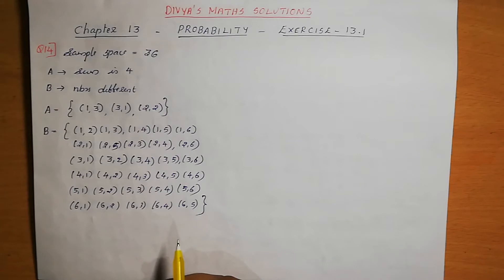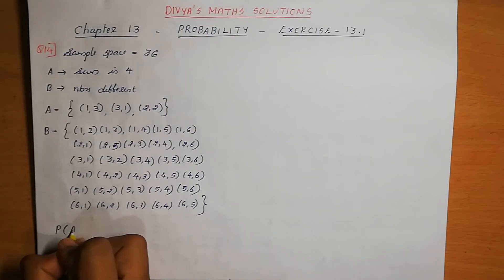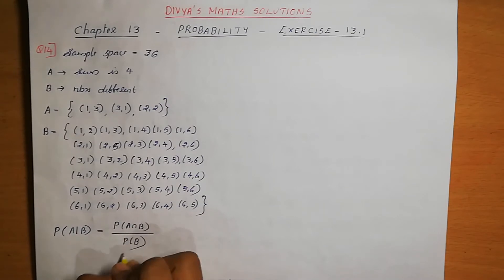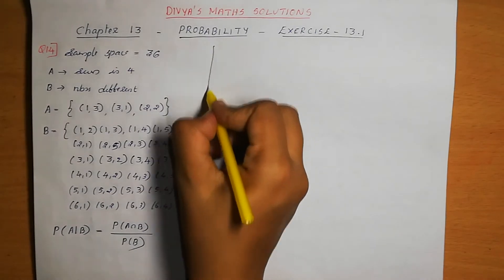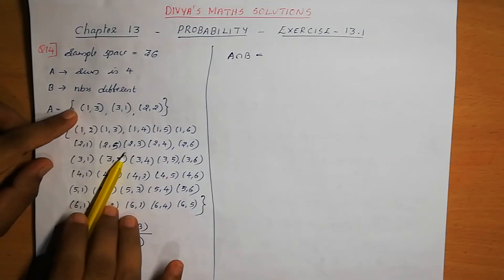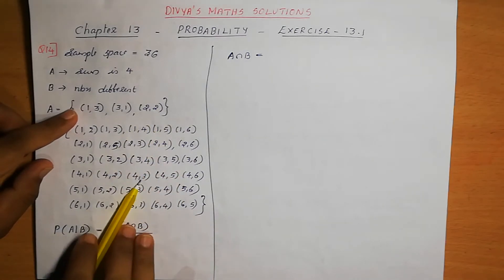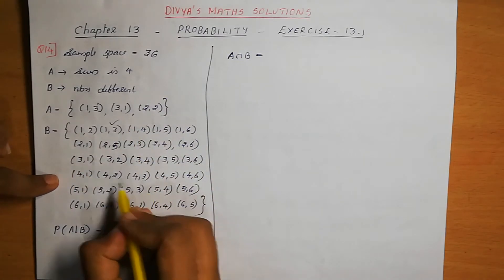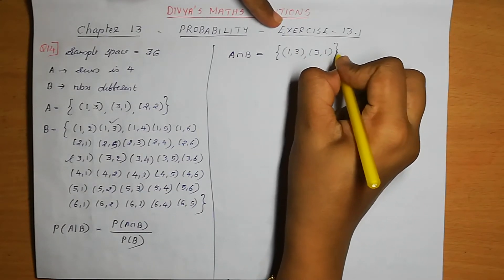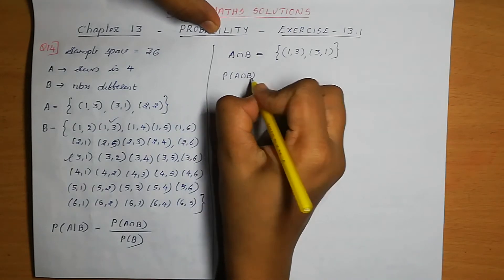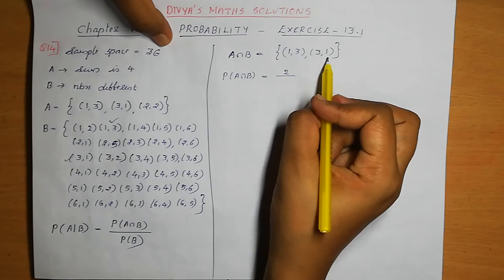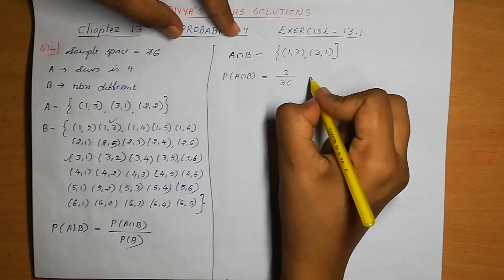We need to find the conditional probability P(A|B) = P(A∩B) / P(B). For A∩B, we look for elements common to both A and B. From A: (1,3), (3,1), (2,2). Since (2,2) has same numbers, it's not in B. So A∩B = {(1,3), (3,1)}, which has 2 elements. Therefore P(A∩B) = 2/36.